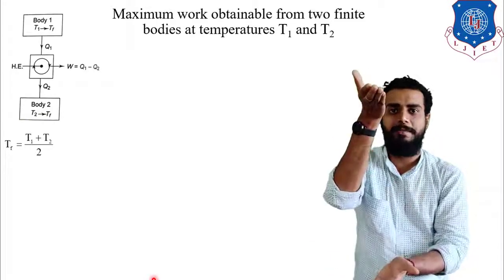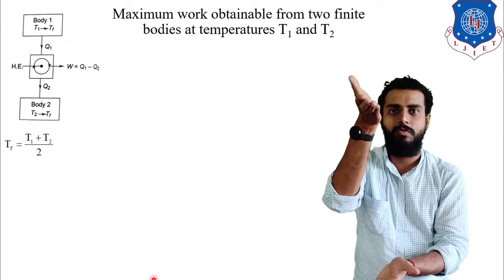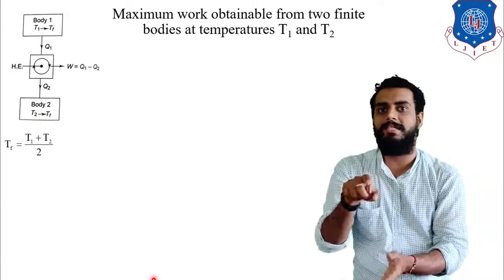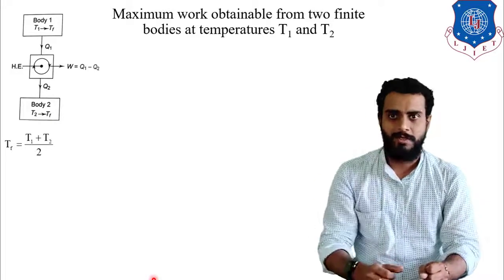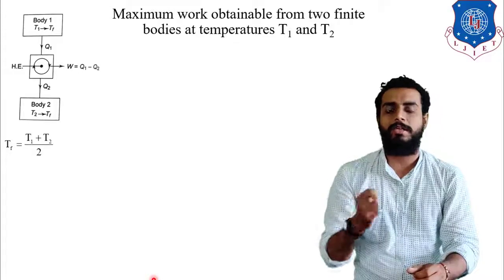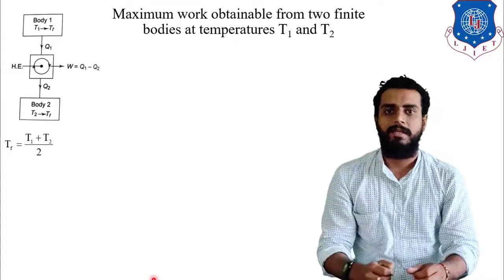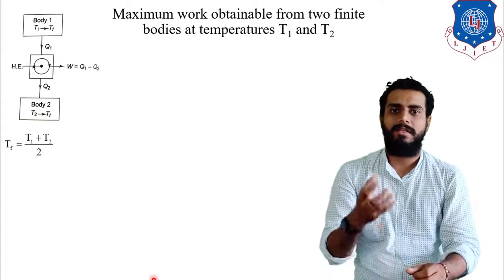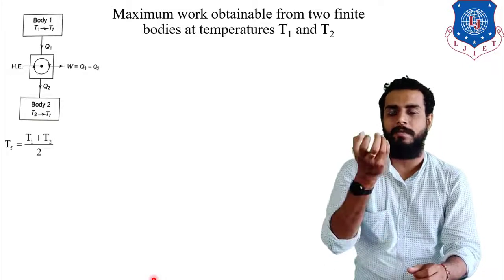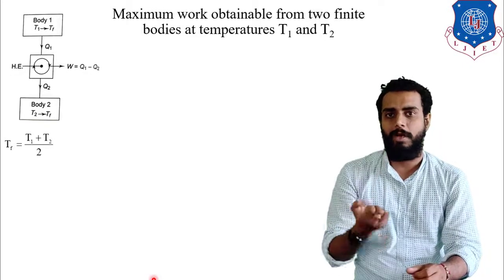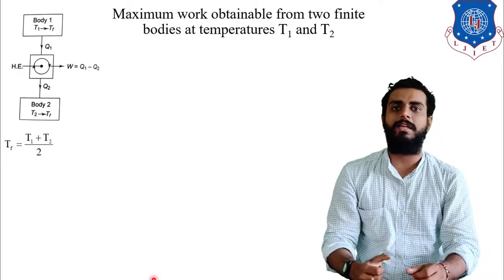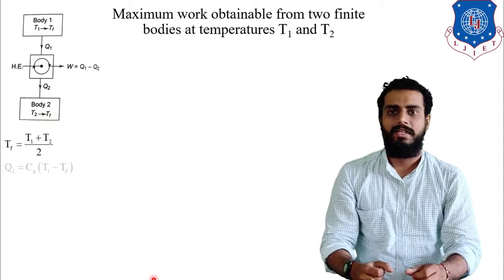Now we are separating these two bodies and operating a heat engine in between. Q1 is the heat extracted at constant pressure from the T1 body, which is equivalent to Cp into T1 minus Tf, because Tf is taken as the reference.